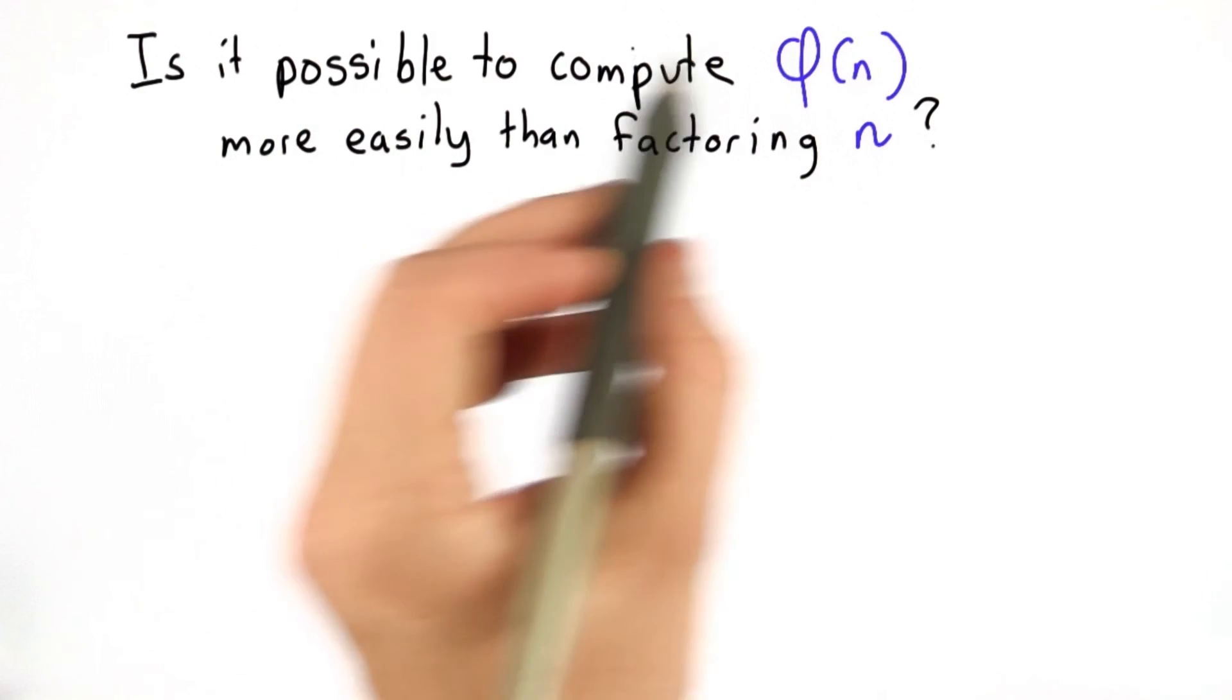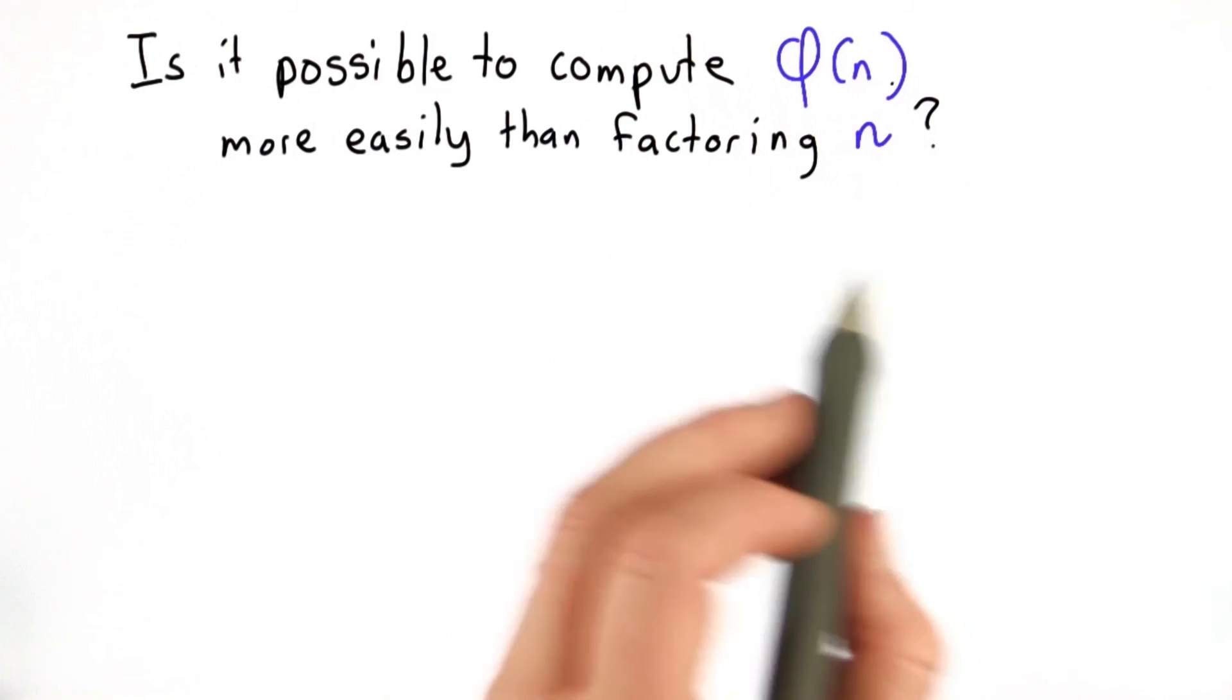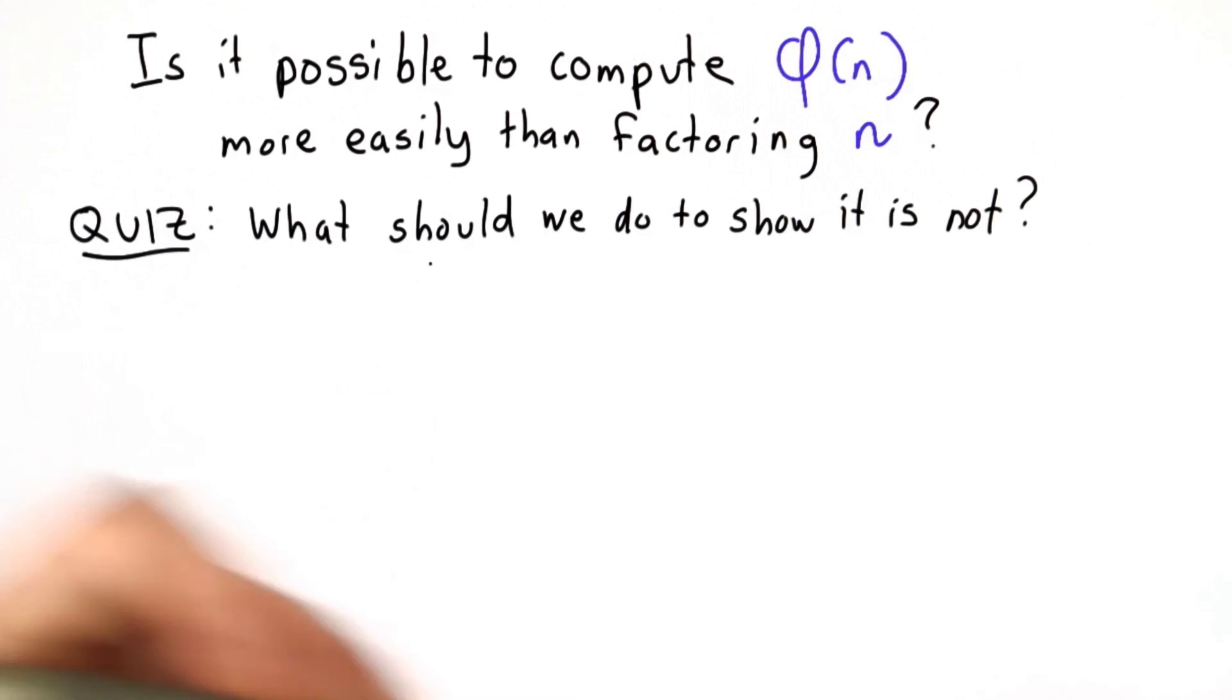So the first question is whether it's easier to compute the totient of n than it is to factor n. So our goal is to show that that's not the case. What should we do to show that?